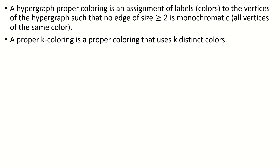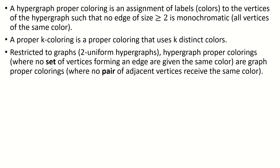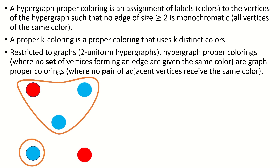Proper hypergraph colorings generalize the notion of proper graph colorings, as if we consider graphs to be 2-uniform hypergraphs, the proper graph coloring condition that no pair of adjacent vertices receive the same color is equivalent to the condition that no edge is monochromatic. Notice that unlike in graph theory, a proper hypergraph coloring allows us to assign adjacent vertices the same color. All that matters is that we don't assign the same color to all of the vertices in an edge.